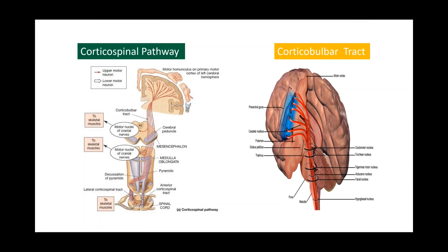He also studied these pathways — the corticospinal pathway and the corticobulbar pathway. These tracts originate in the cerebral cortex, carrying motor fibers to the spinal cord and the brainstem. They are responsible for the voluntary control of the musculature of the body and the face. Together, these two tracts form the pyramidal tracts.